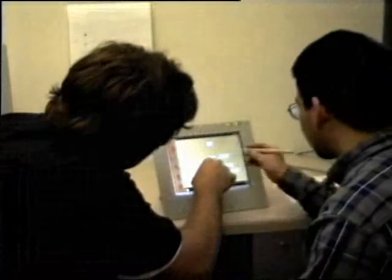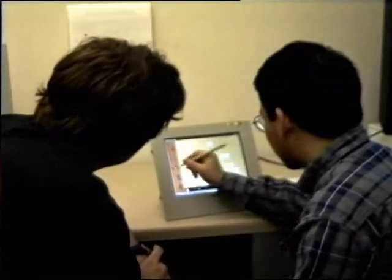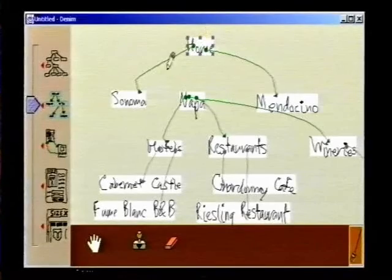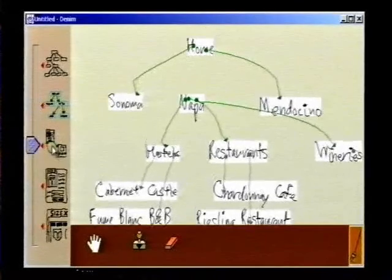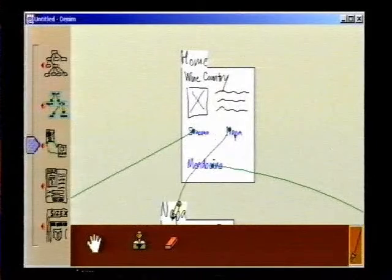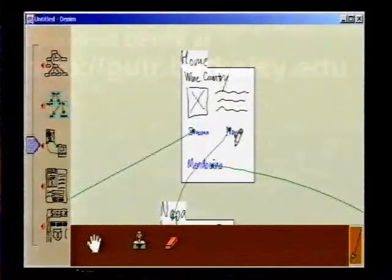Denim supports current work practices of website designers, while taking advantage of the interactivity of the computer. Because of this, we believe it will enable designers to produce better quality websites in a shorter amount of time than with current tools. You can download Denim at guir.berkeley.edu for use in your next design.